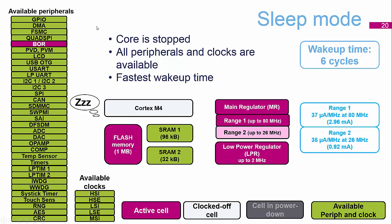The next mode is sleep mode, where only the core is stopped and all other peripherals are available. Configured to run from range one, we can run at 80 MHz with a wake-up time of about six cycles. This brings current consumption down from about 150 µA/MHz down to about 37 µA/MHz — a fairly significant current saving just by switching off the Cortex-M4 core.